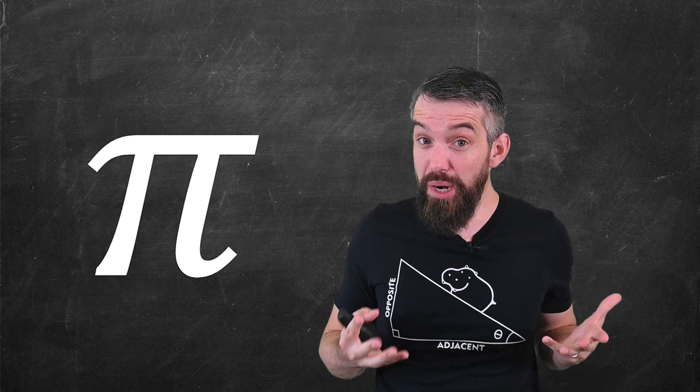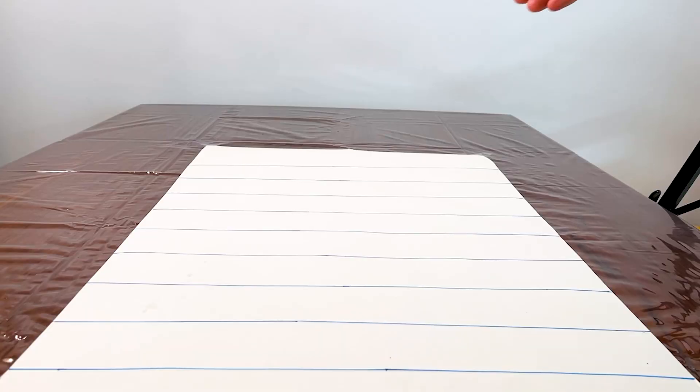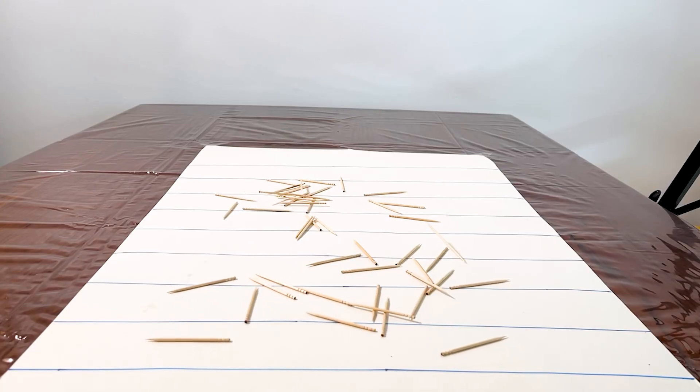In this video I want to show how you can approximate the digits of pi experimentally. Here I'm dropping a bunch of toothpicks randomly onto a paper with equally spaced lines. Some of the toothpicks cross the lines and some of them don't.